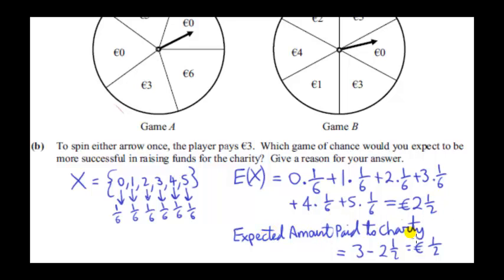So the expected amount paid to charity is three minus two and a half. The player pays three euros to play, and on average wins two and a half, so on average fifty cents is paid to charity for each game of Game B. Therefore Game B is more successful in raising funds — fifty cents as opposed to the previous game which was only one-fifth of a euro.